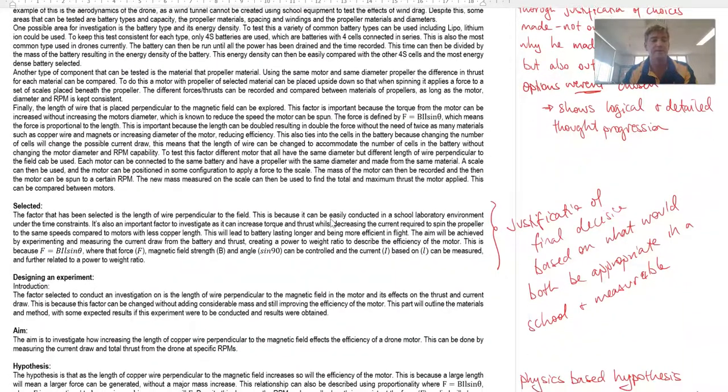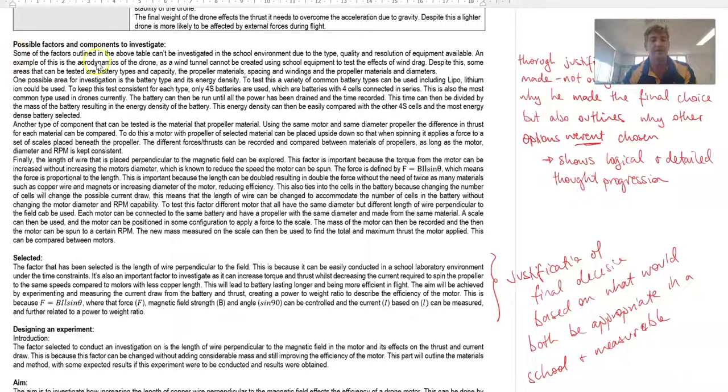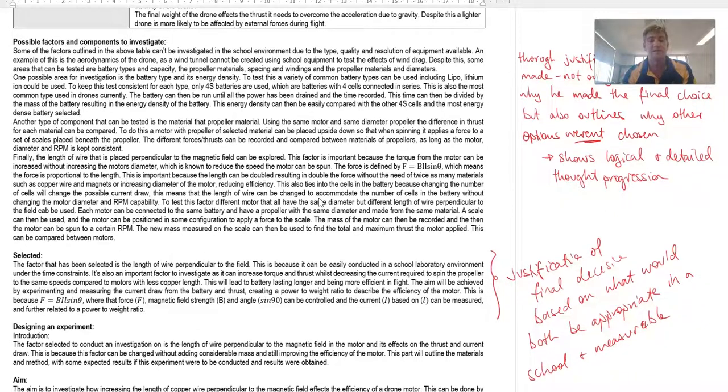Following that, this student has gone through and highlighted some of the factors that could be or can't be investigated due to circumstances, and here's one possible area for investigation, another type of component that can be tested, finally the length of wire, blah blah blah. So here's my student going through and saying, I could do this but I'm not going to because of these reasons. I could do this but I'm not going to because of these other reasons. Here's what I can do and here's what I'm going to do and here's why I'm going to do it. That justification of the final decision is showing that really high level understanding of the critical nature of the deconstruction.